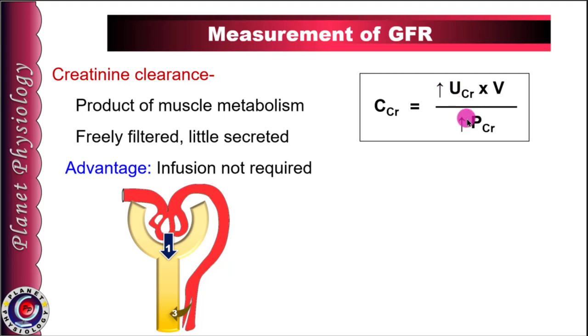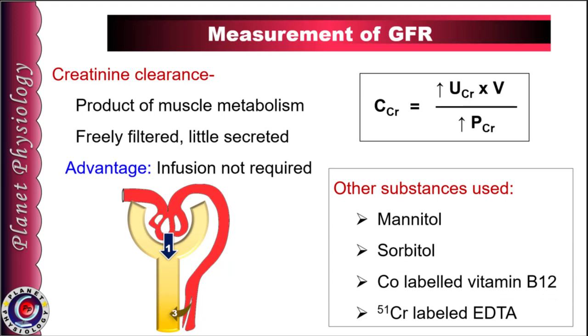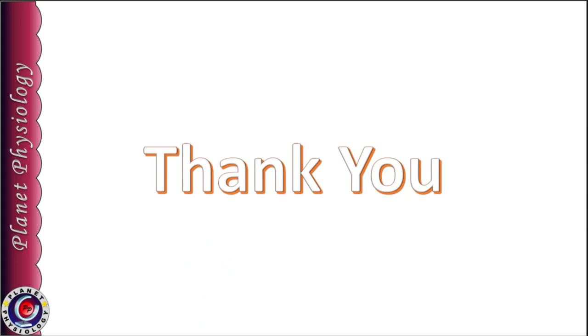These two errors compensate each other, so creatinine clearance gives fairly reliable results. Apart from inulin and creatinine, other substances such as mannitol, sorbitol, cobalt-labeled vitamin B12, and chromium-51 labeled EDTA are also used to measure GFR. This concludes the discussion on regulation and measurement of GFR.